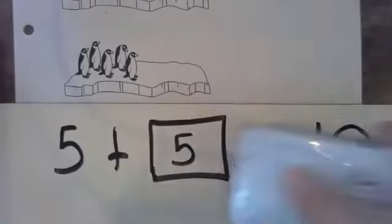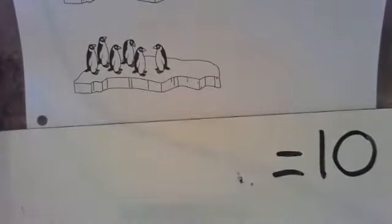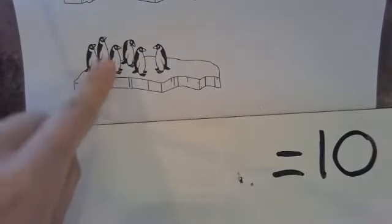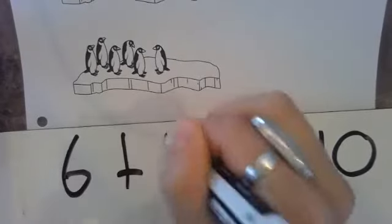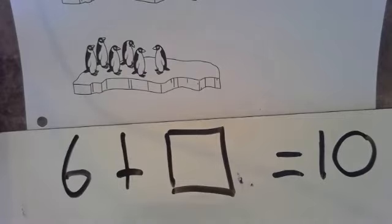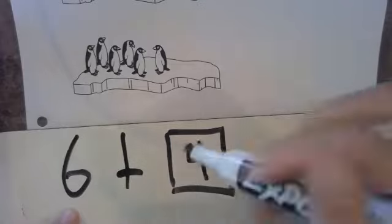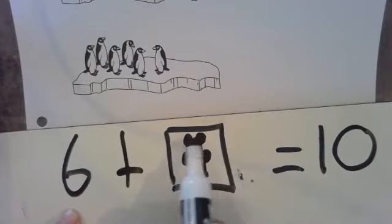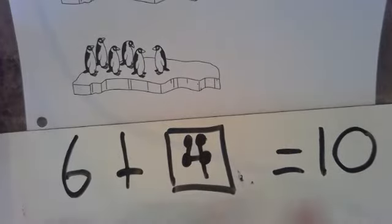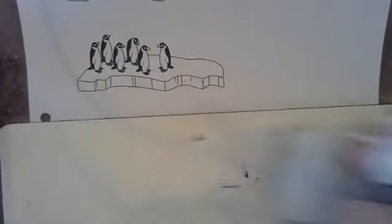Good job, guys. Let's take a look at the next picture. How many penguins? Let's count by twos: two, four, six. Six penguins plus how many more equals ten? Good job — you should have had four. Because six — remember our dot counting? I like to put four dots: six, seven, eight, nine, ten. Six plus four equals ten. Good job, guys.